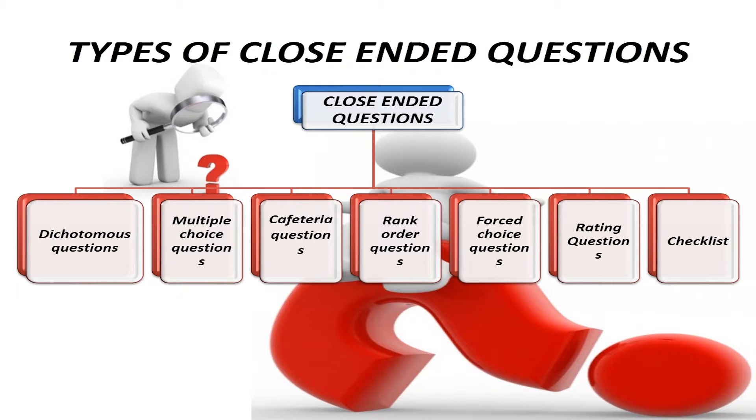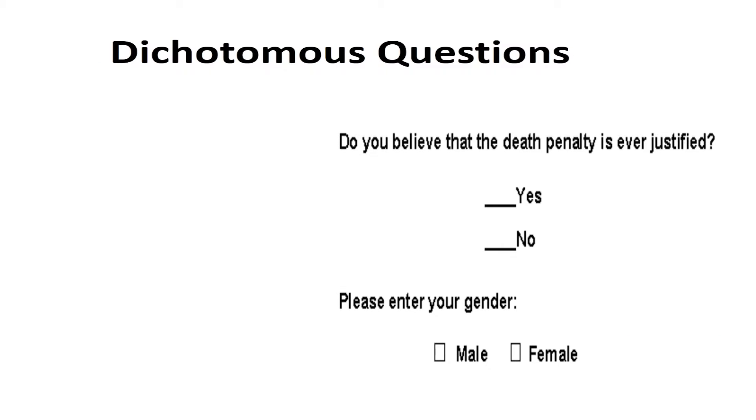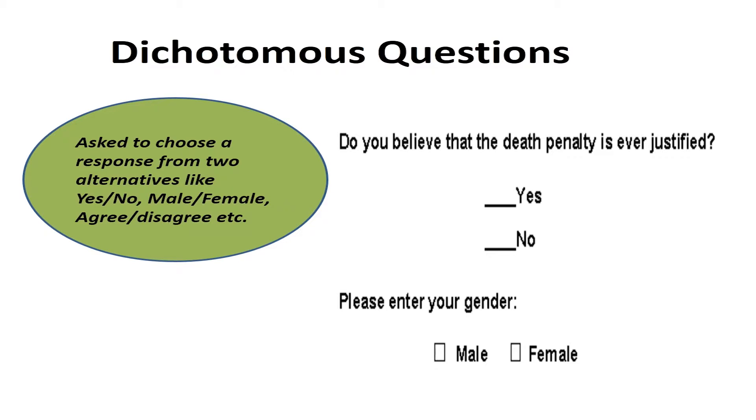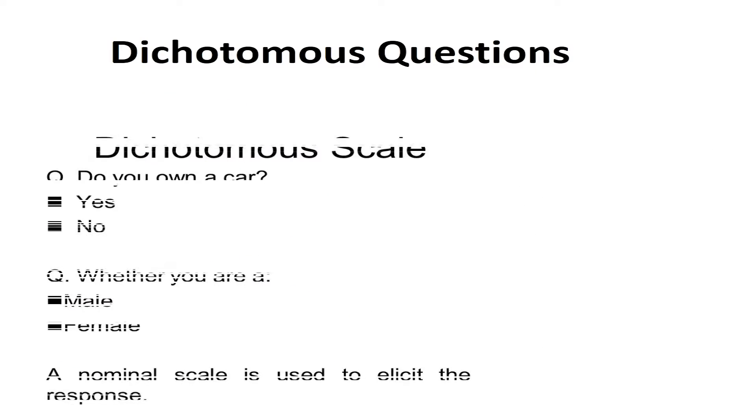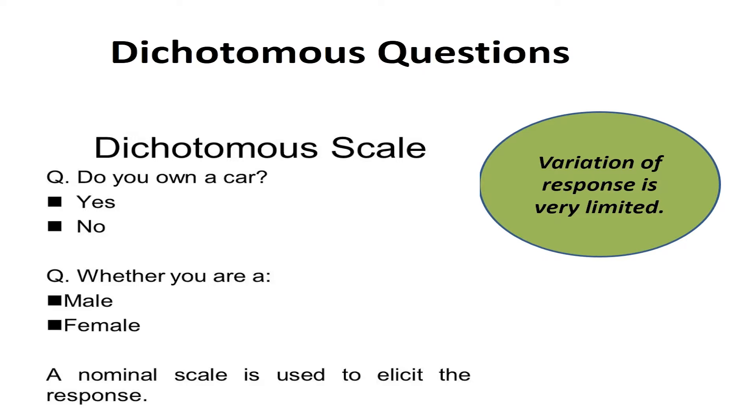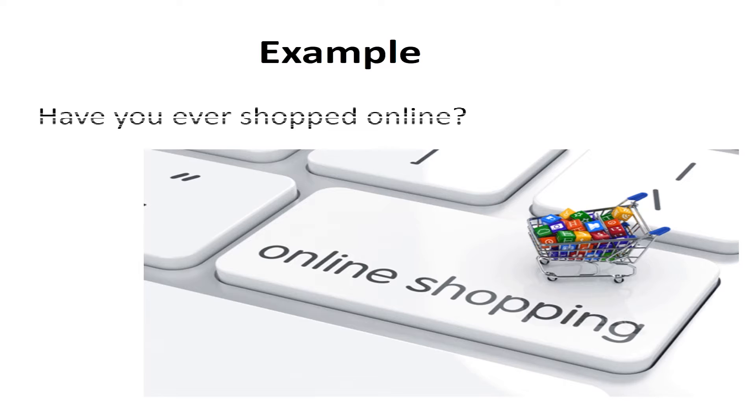The first is the dichotomous questions. In this type of questions, the respondents are asked to choose a response from the two alternatives, like yes or no, male-female, agree-disagree, etc. This is very easy to administer and analyze as variation of response is very limited and the data is prone to errors.